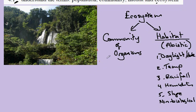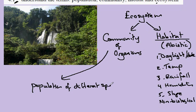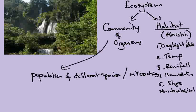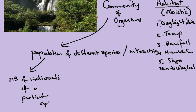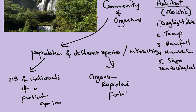Our community of organisms is made up of populations of different species and they are interacting. A population is the number of individuals of a particular species, so we would need to find the population of each species within our habitat. And species, of course, we could define as organisms that reproduce to give fertile offspring.